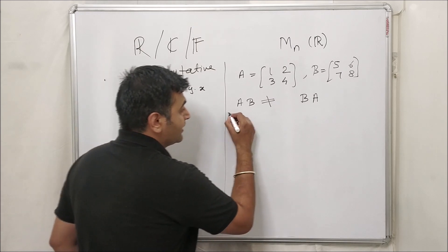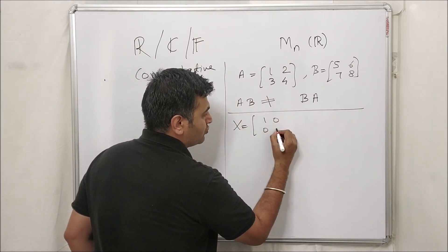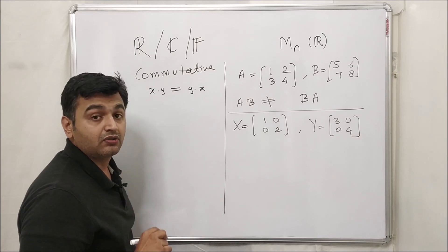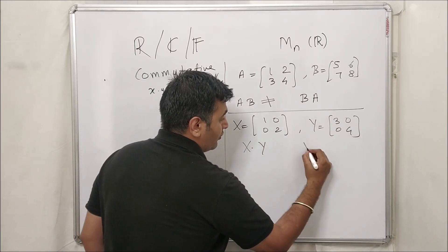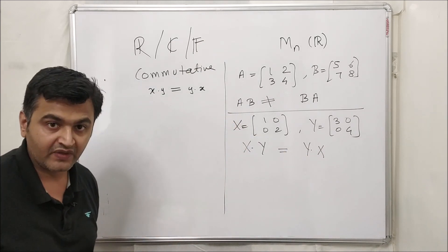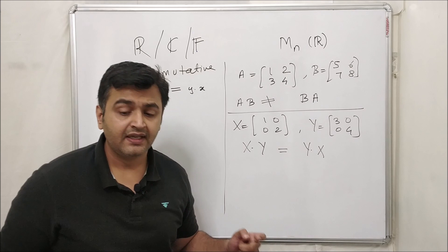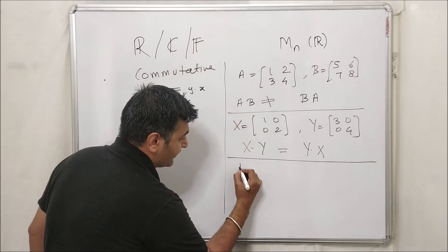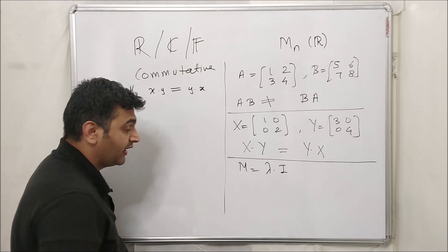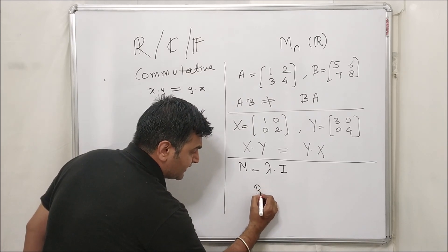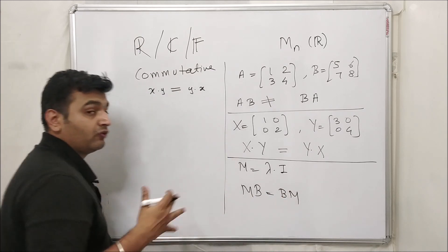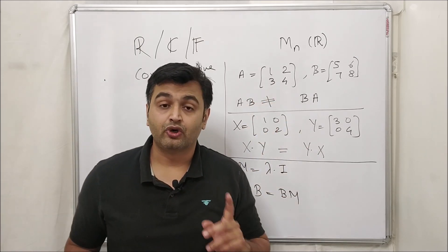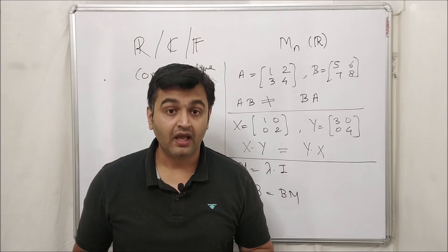That said, I'm not saying they are always unequal. For example, if you take diagonal matrices such as X = [1,0;0,2] and Y = [3,0;0,4], then XY = YX. Any two diagonal matrices will always commute. Moreover, if M is a scalar matrix — that is, λ times the identity matrix — then for any matrix B, M×B = B×M. So for these special cases we have equality, but in general matrices do not commute.